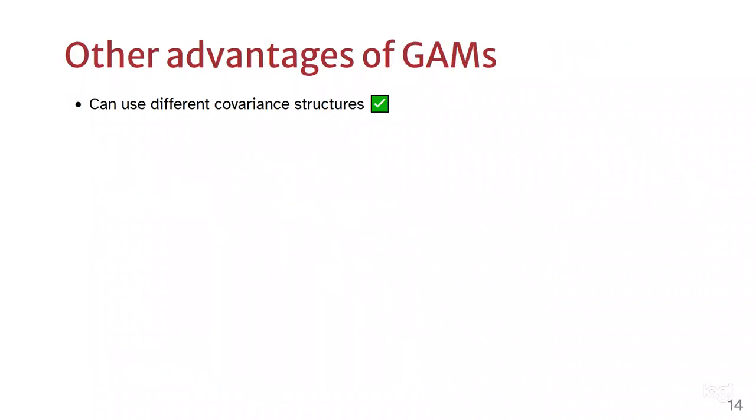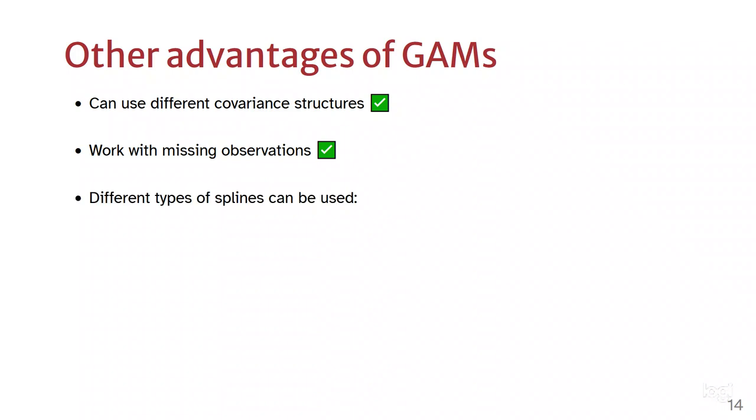GAMs are also advantageous because they can use different covariance structures which repeated measures ANOVA cannot. They can work with missing observations. And if needed, you can use different types of splines, such as Gaussian process or thin plate splines.